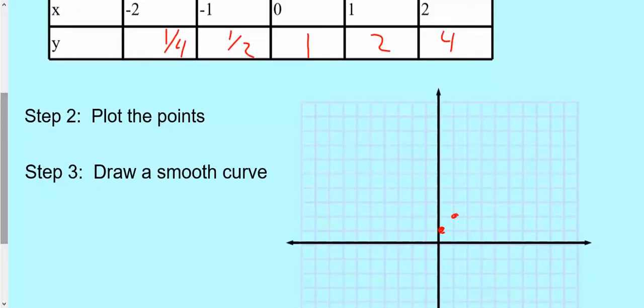0, 1, 1, 2, 2, 4. And then 1 half, and 1 quarter. And again, this graph is not going to cross the x-axis.